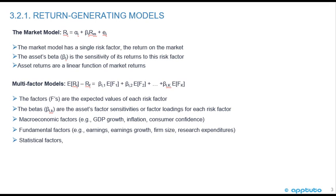We can then look at multi-factor models, where we're just adding more sensitivities. The factors F are the expected values of each risk factor. The betas are the asset's factor sensitivities, or factor loadings, for each risk factor. Macroeconomic factors such as GDP growth, inflation, and consumer confidence could be other factors.